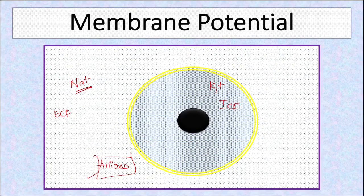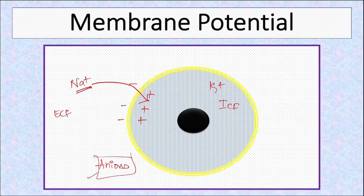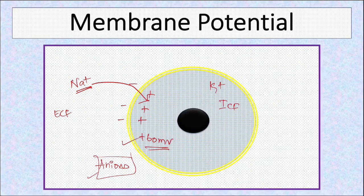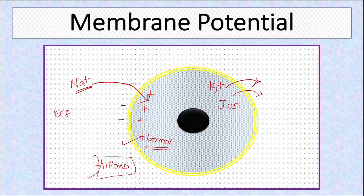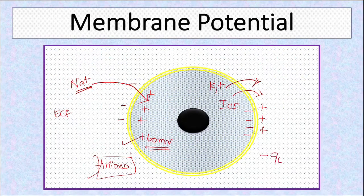Sodium, if it is allowed to move inside, it would enter the cell and generate a positive potential inside. So at around plus 60 millivolts, the membrane will attain equilibrium — this is the Nernst potential of sodium. Potassium, if allowed to move, will go outside down its concentration gradient and develop a potential difference of minus 90 millivolts — this is the Nernst potential of potassium.